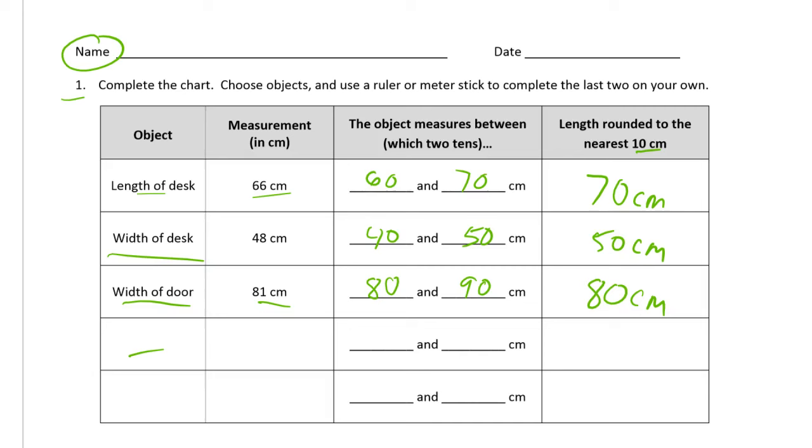And then here's two things for you to measure. Just one thing to mention: if you get something that's got like say 25 centimeters, something that ends in five, that has five ones, then you're going to round up. If it's exactly in the middle between two tens, if it's a five right in the middle, then you're going to round up. That didn't come up in the first three examples here, but it might for whatever you measure.